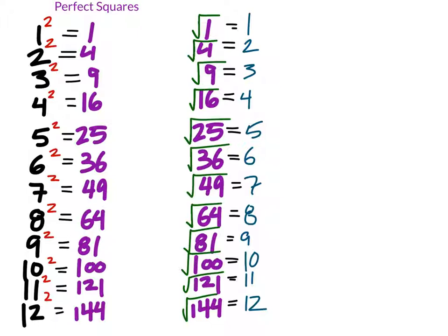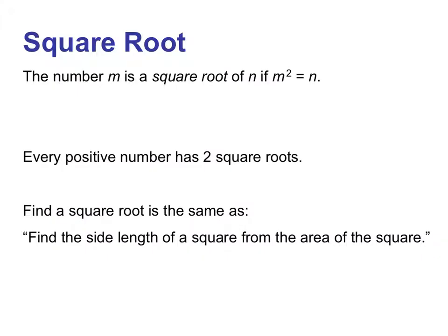Another interesting thing about these is that pretty much all numbers between them are irrational numbers, which means taking their square root would give a decimal value that goes on forever without repeating or terminating. You can see that in a calculator — there's no real pattern. The number m is the square root of n if m squared equals n. Every positive number has two square roots, but for the most part we're only looking at positive square roots.